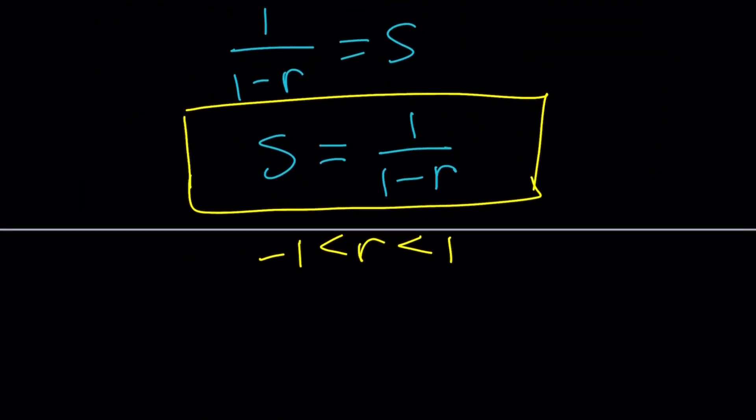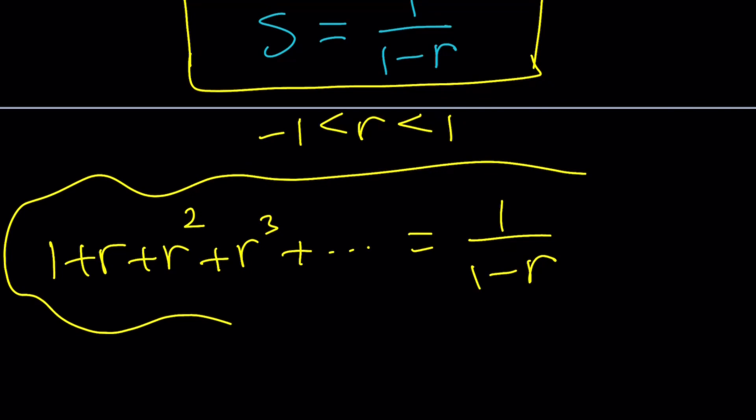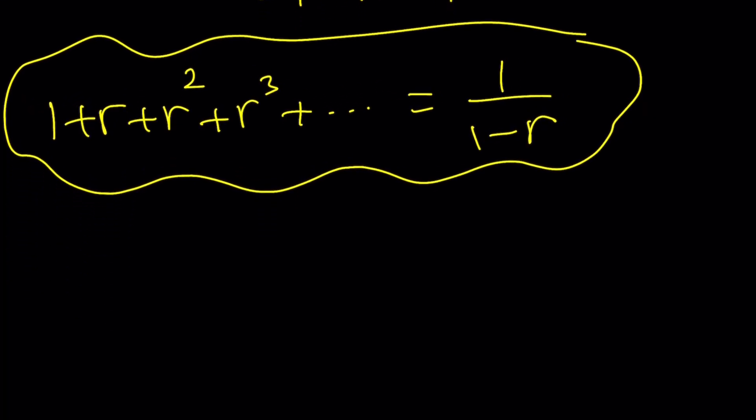So this is our sum. In other words, 1 plus R plus R squared R cubed dot dot dot equals 1 over 1 minus R as long as R is between negative 1 and positive 1. Make sense? So that's our formula. We derived it so we can go ahead and use it. But one thing to be careful about is this one is straightforward. I mean, what is 1 plus x plus x squared plus x cubed? You're just replacing R with x. So, that's going to be 1 over 1 minus x. That's easy.